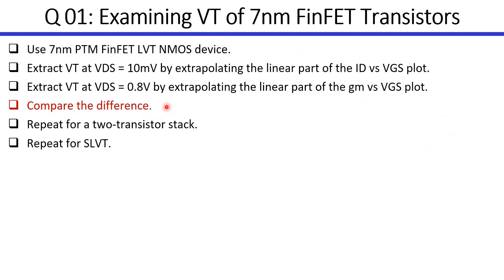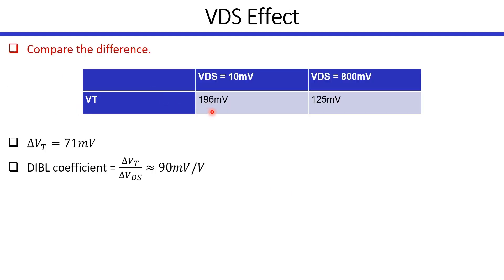So now we want to compare the difference between these two cases. We will find that the threshold voltage is much lower actually in the case of VDS equal to 800 millivolts. The shift in the threshold voltage is around 71 millivolts. If you calculate the DIBL coefficient, we will find that there is around 90 millivolts reduction in V threshold for every 1 volt change in VDS.